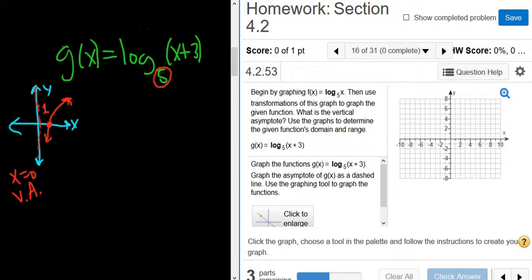So now we have to think about what's happening to this graph of log. Well, we're adding 3 to the x. So when you add 3 to the x, you're going to shift left 3, right? It's backwards. So when you add to the x, you think it's right, but no, it's left.